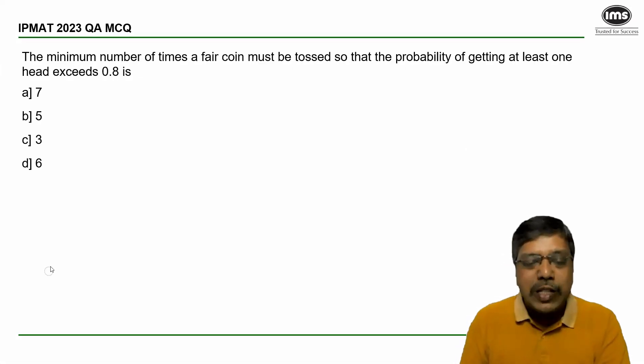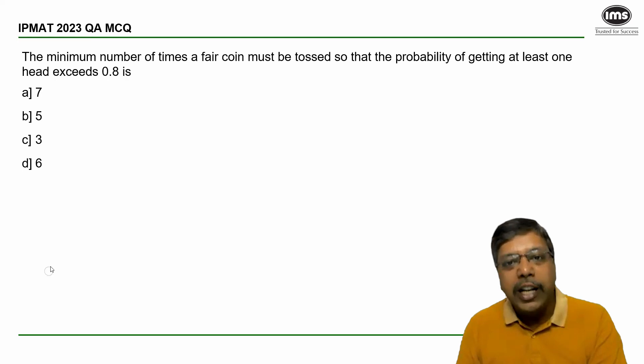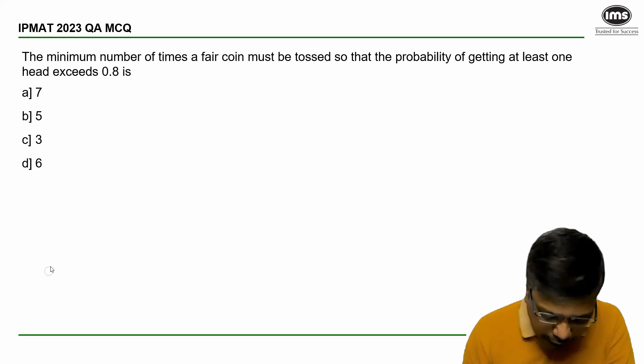The minimum number of times a fair coin must be tossed so that the probability of getting at least one head exceeds 0.8 is... Now let us assume we are tossing the coin n times.